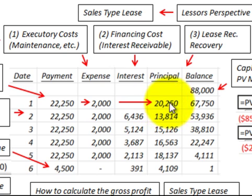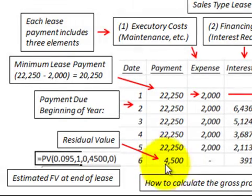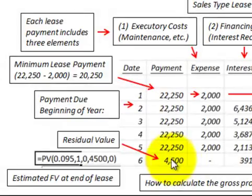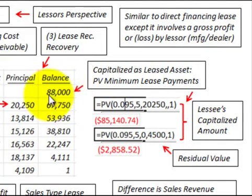Next, we have the residual value, in this case $4,500, which is the estimated fair value that the leased asset will be worth at the end of the lease term. Then we have the capitalized amount on the lease of $88,000.